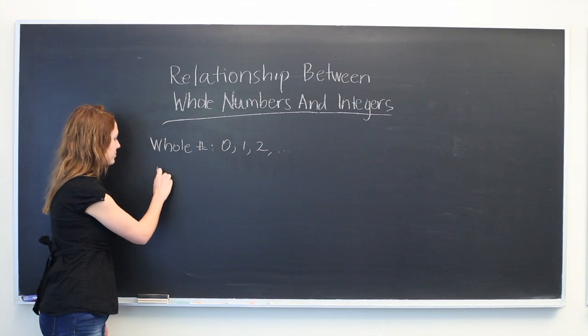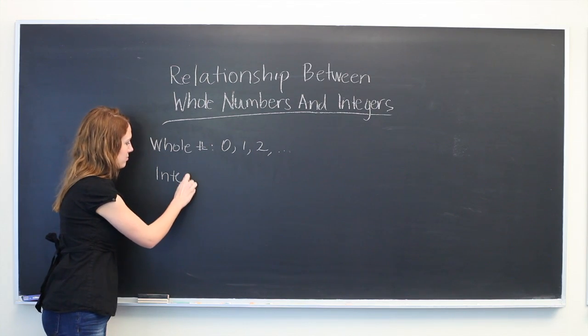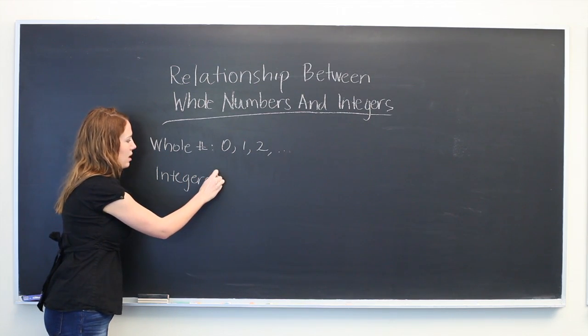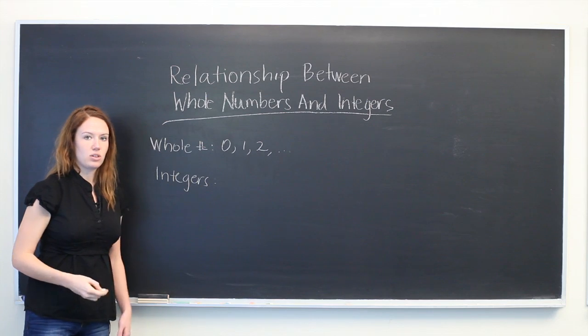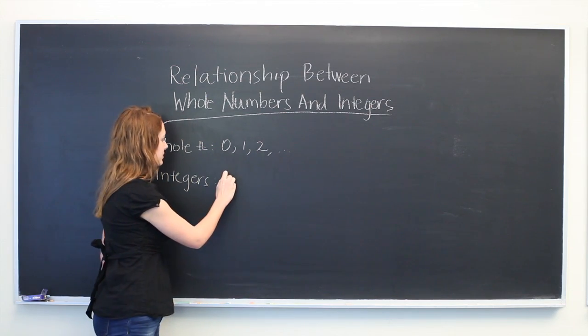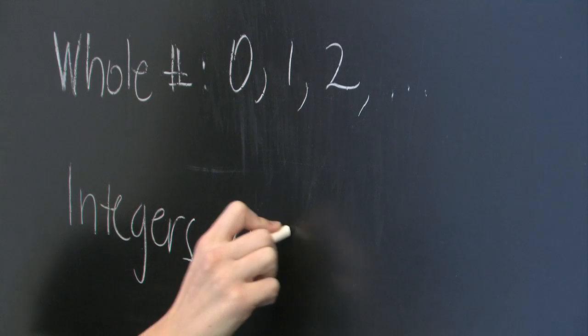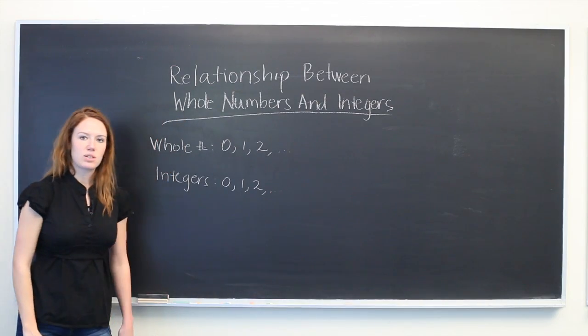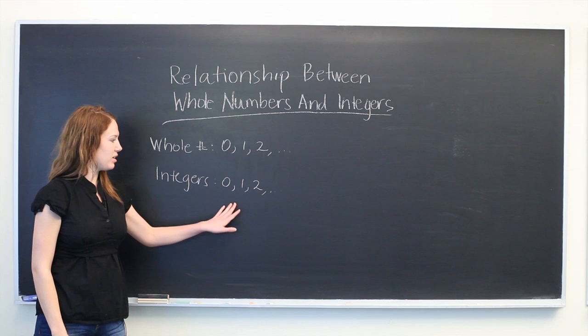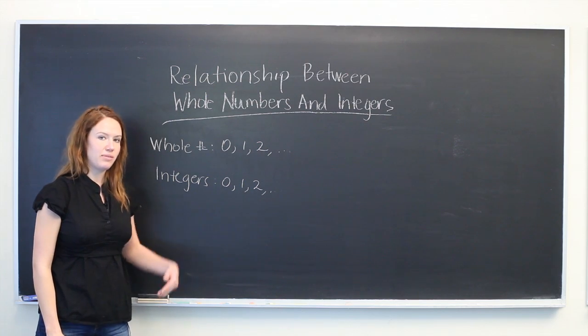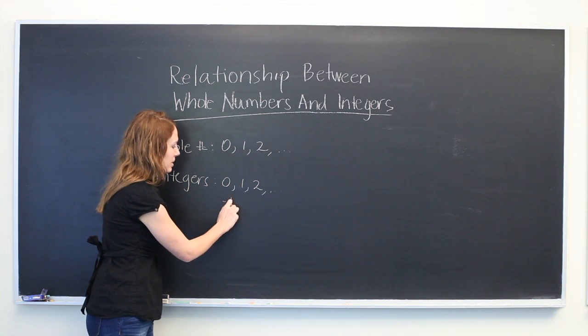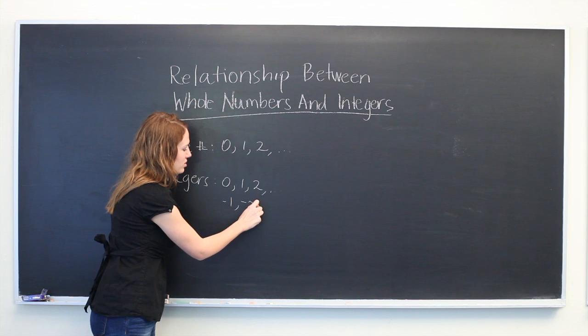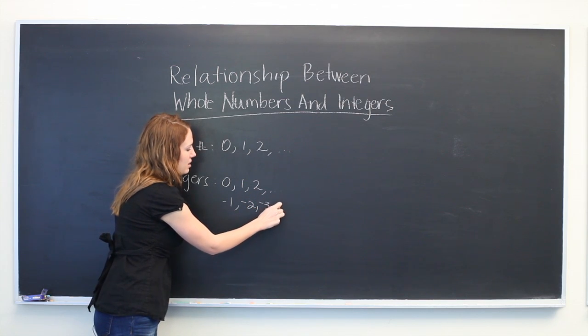Now integers are defined as whole numbers, so we have the set of 0, 1, 2, and so on, as well as the opposites of the non-zero constant values. So we would have -1, -2, -3, and so on.